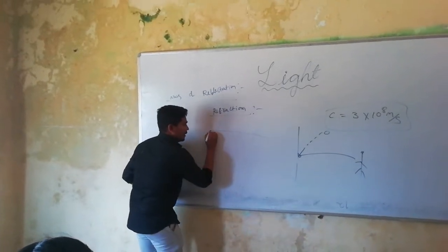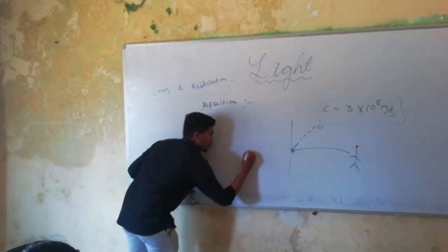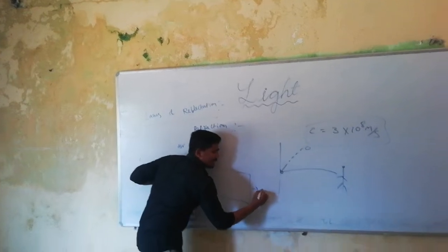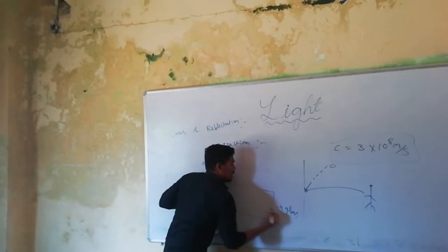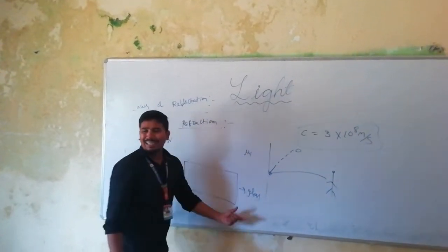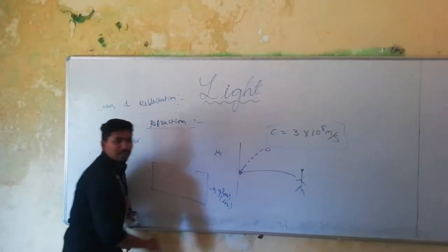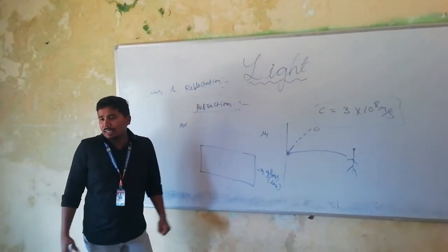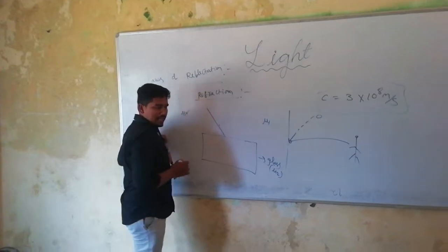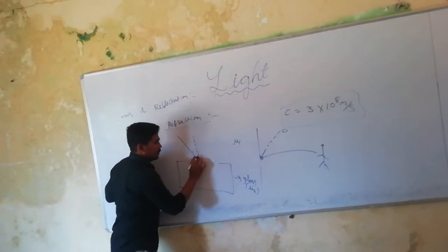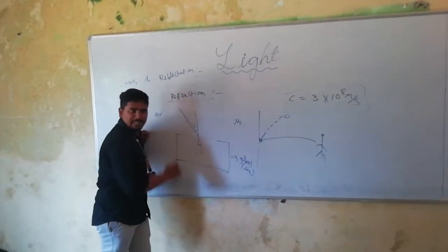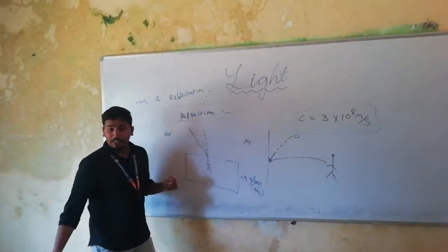This is one medium — call it medium A. I take a glass slab, which is medium 2. The light is travelling from one medium to another medium. This is the incident ray, this is the normal ray. The light is bending. What is this angle? Angle of incidence. What is this angle? Angle of refraction.